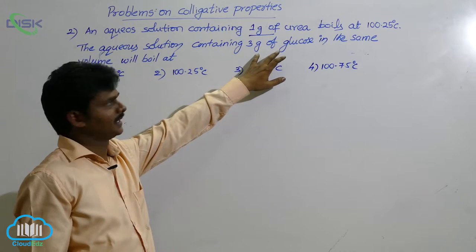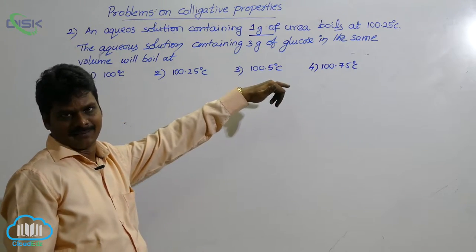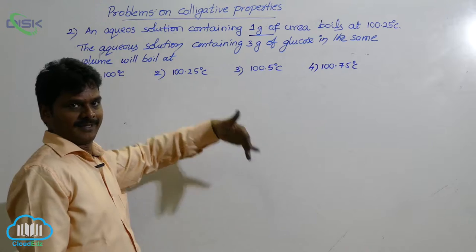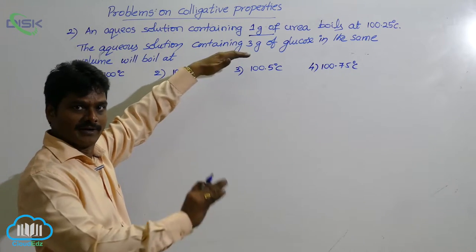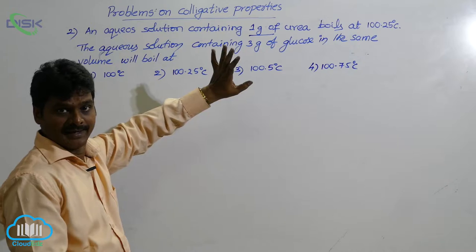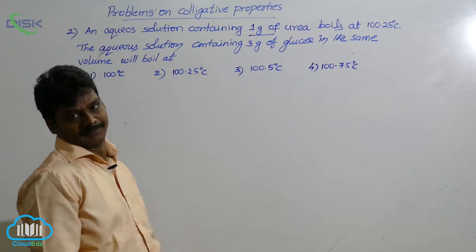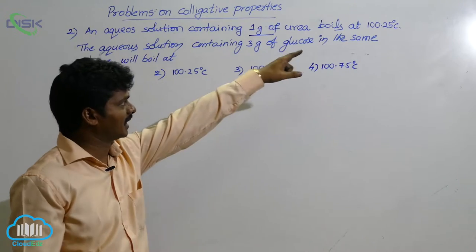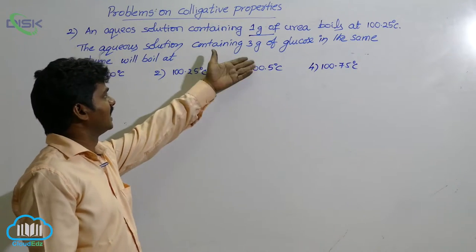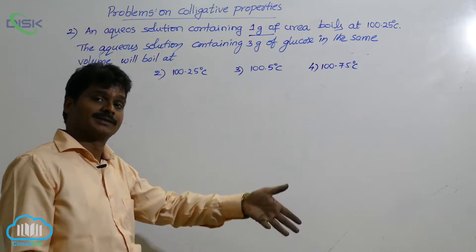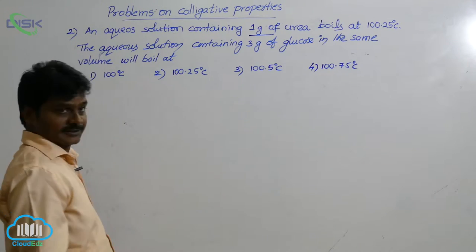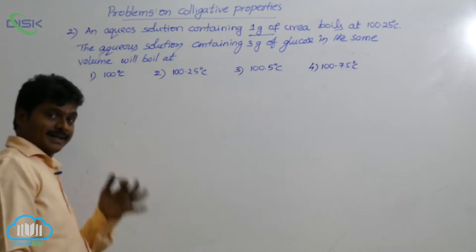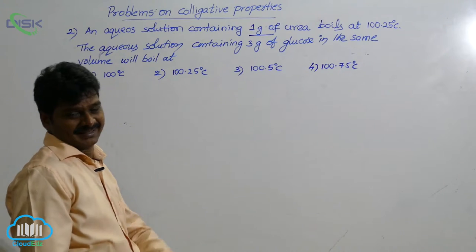Similarly, the second solute is glucose. 3 grams is dissolved in the same amount of solvent as the first solution. The second solution solvent is same and amount of solvent is also same. But the first solution boils at 100.25, then 3 grams of this glucose solution boils at which temperature is asking.